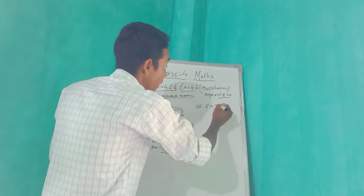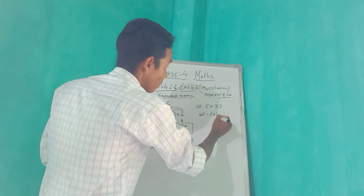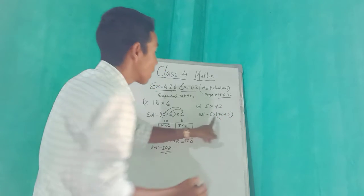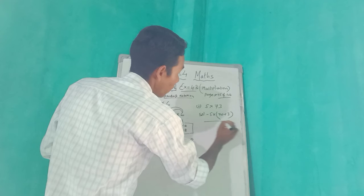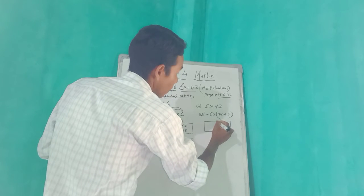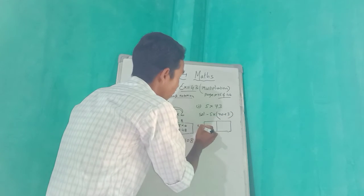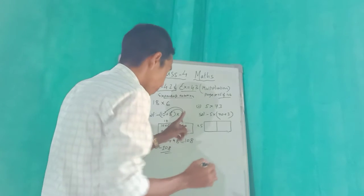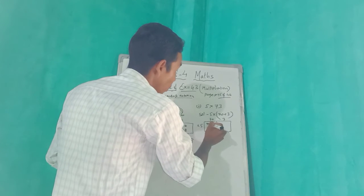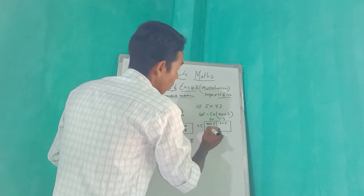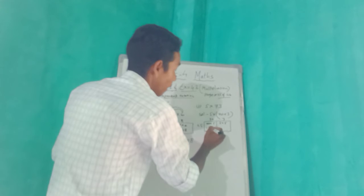Number 2: 5 into 73. Solution. 5 into — in bracket — 70 plus 3, because 70 plus 3 equals 73. Now we will make a box. We write 70 here and 3 here. So 70 into 5 and 3 into 5. 70 into 5 equals 350.